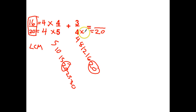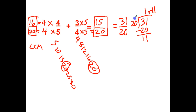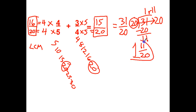Over here, since 4 times something equals 20 — 4 times 5 equals 20 — so 3 times 5 equals 15. So now I have 16 twentieths plus 15 twentieths equals 31 twentieths. It's an improper fraction because the larger number is on top, so I'm going to divide. 31 over 20 goes in one time. Subtract. I've got an 11. Bringing it over, my answer is going to be 1 and 11 twentieths. I can't simplify it any farther because they're not both even. So 1 and 11 twentieths.